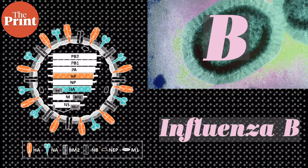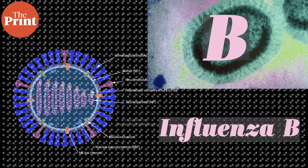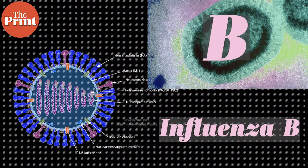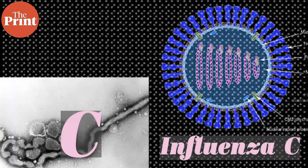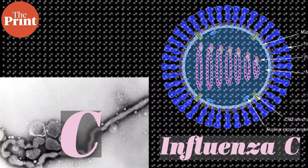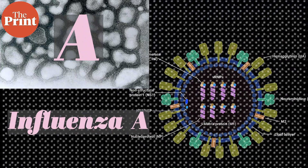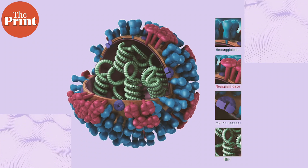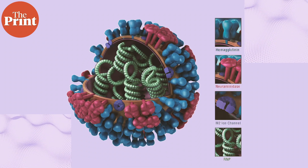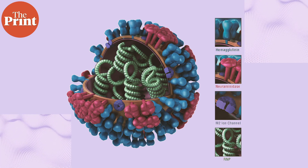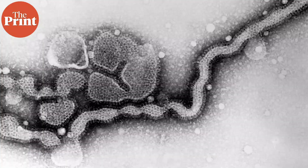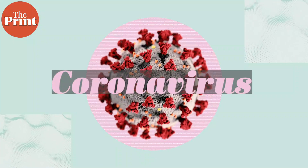Of these, influenza B is found very rarely — it mutates very slowly and we acquire immunity to it at a young age. Influenza C is also very rare and primarily affects children when it spreads to humans. But influenza A is not so easy to tackle or categorize — it consists of many many subtypes. We've seen these names before: H1N1, H3N2, H7N10, H5N8 — all of these are different subtypes of the influenza A virus.